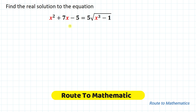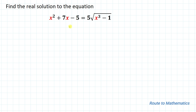Hello everyone, welcome to Root 2 Mathematics. In this video we are going to solve this interesting olympiad question. The given question is: find the real solution to the equation x² + 7x - 5 = 5√(x³ - 1). Here we are asked to find all real solutions of variable x.